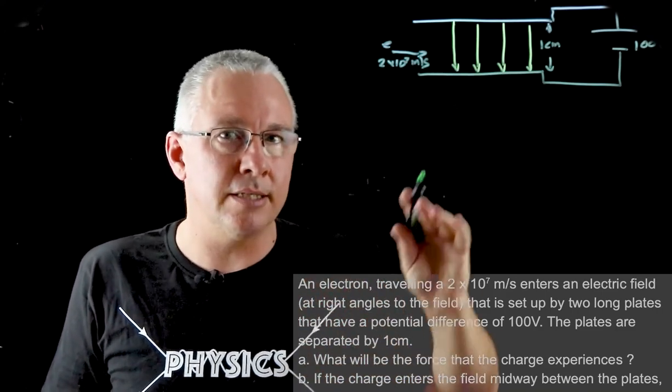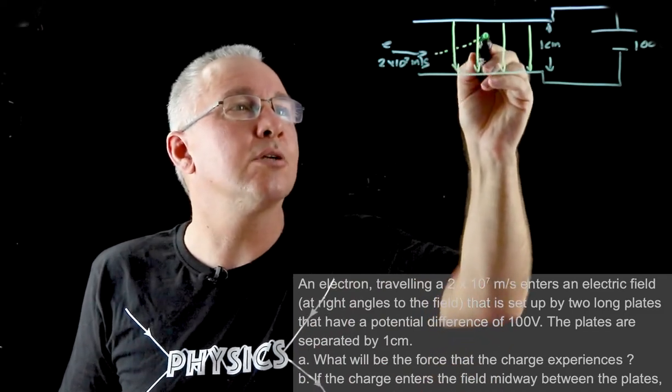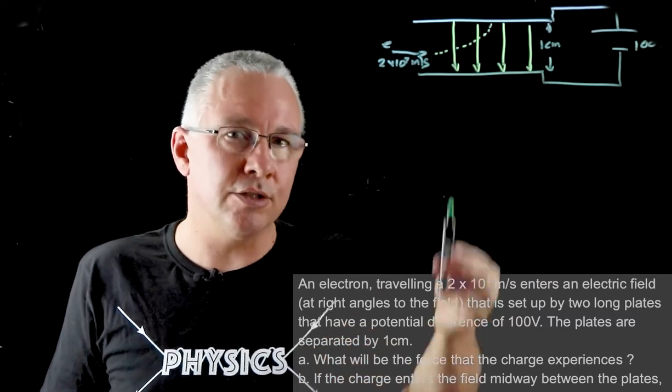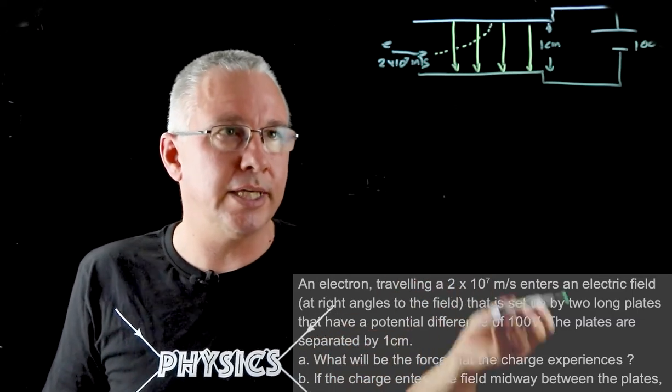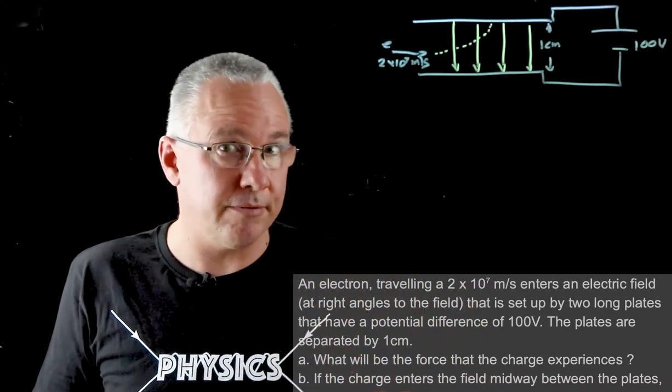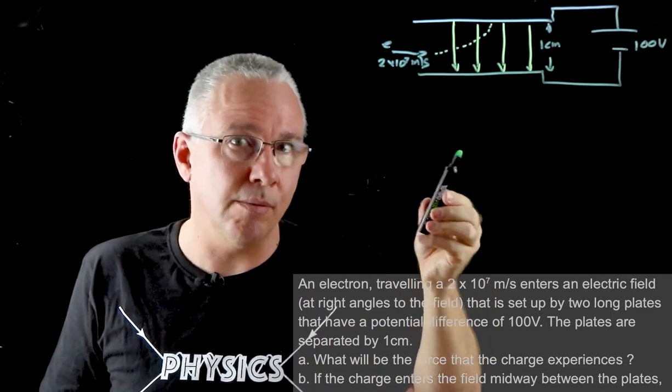Now the electron goes against the electric field lines and so therefore it will undergo motion that looks like this, and it is in fact projectile motion because we're getting a constant force in the vertical direction, we're getting a constant velocity in the horizontal direction. Those two are independent of each other and so as a result we get a classic projectile motion problem.